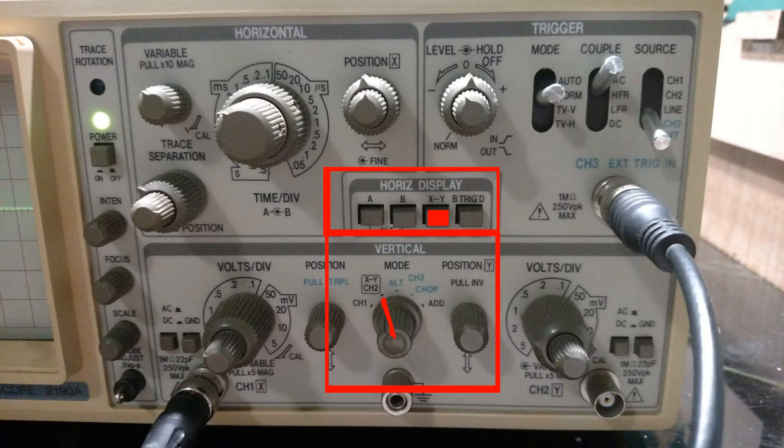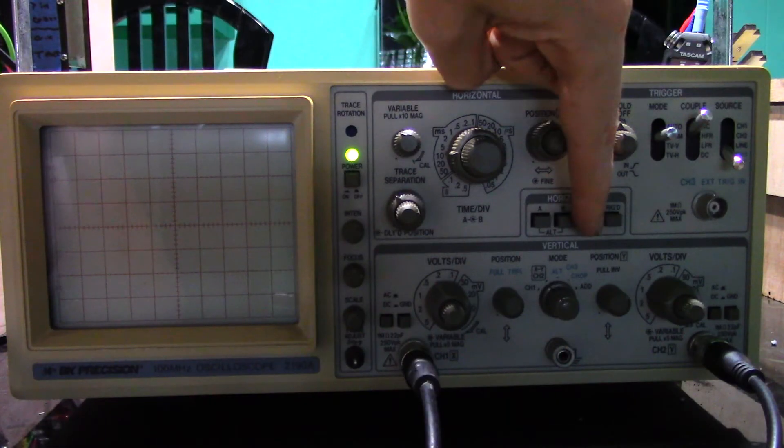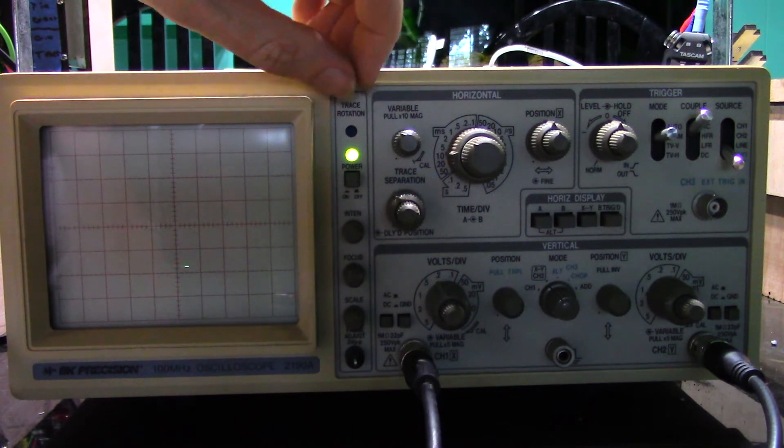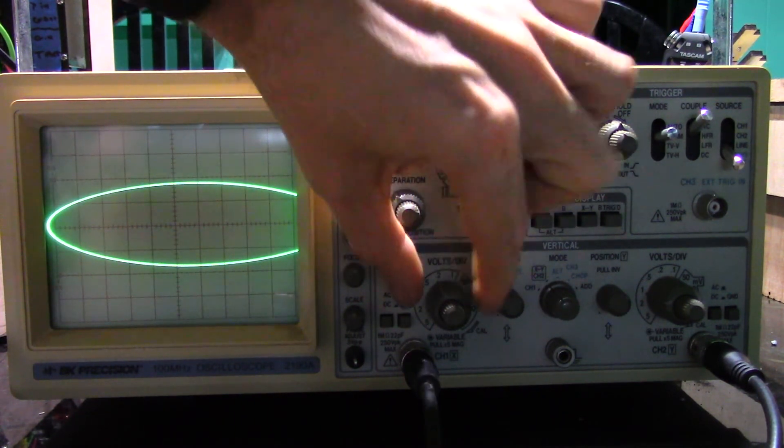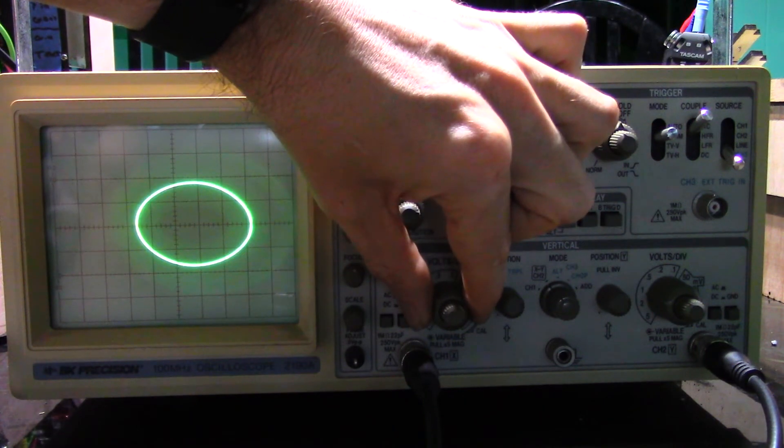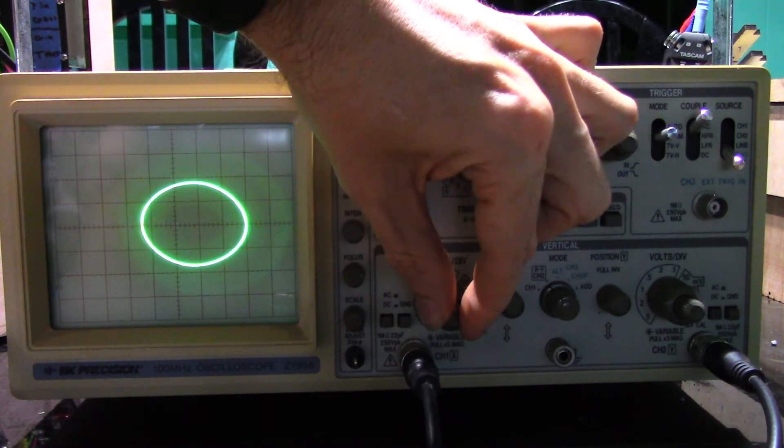This will disable most of the controls on the scope, but the only controls you really need to use being the scale for the X and Y to make the circle round, and the position controls to center it on the screen. Intensity might also need to be adjusted to make things visible.